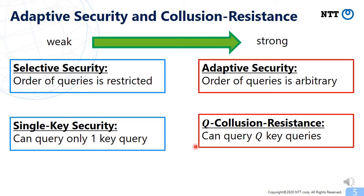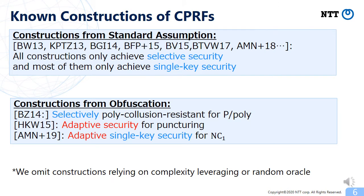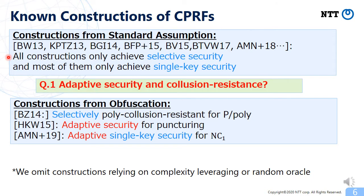I would like to review known constructions of CPRF, divided into two categories. The first category is constructions from standard assumptions. There are many constructions in this category; however, all of them only achieve selective security, and most only achieve single-key security. Our question for this category is: can we construct adaptive, secure, and collusion-resistant CPRF for any functionality from standard assumptions?